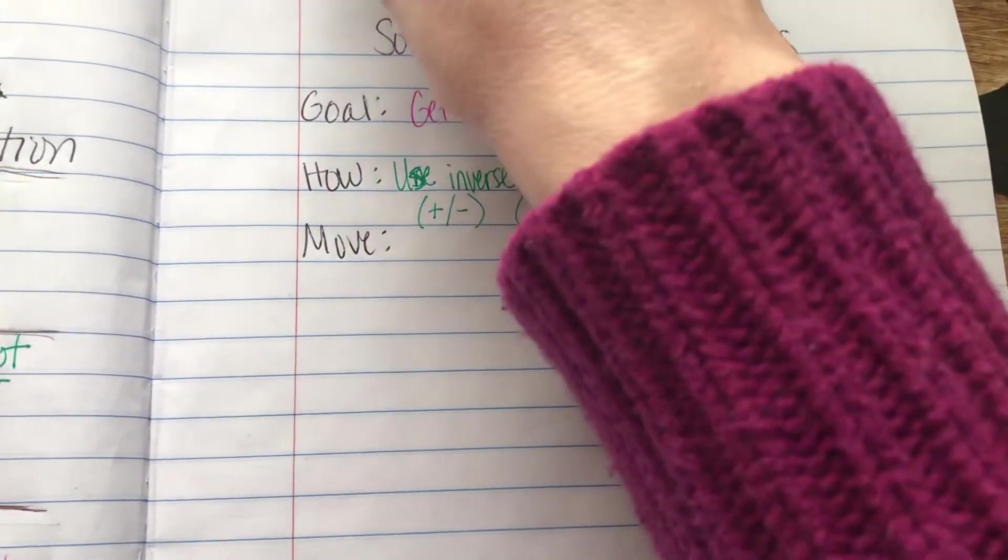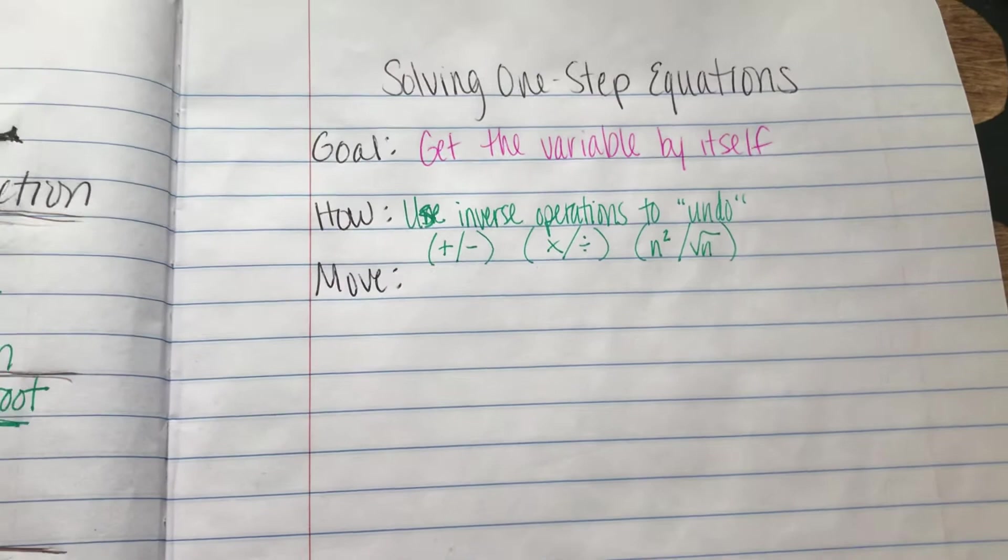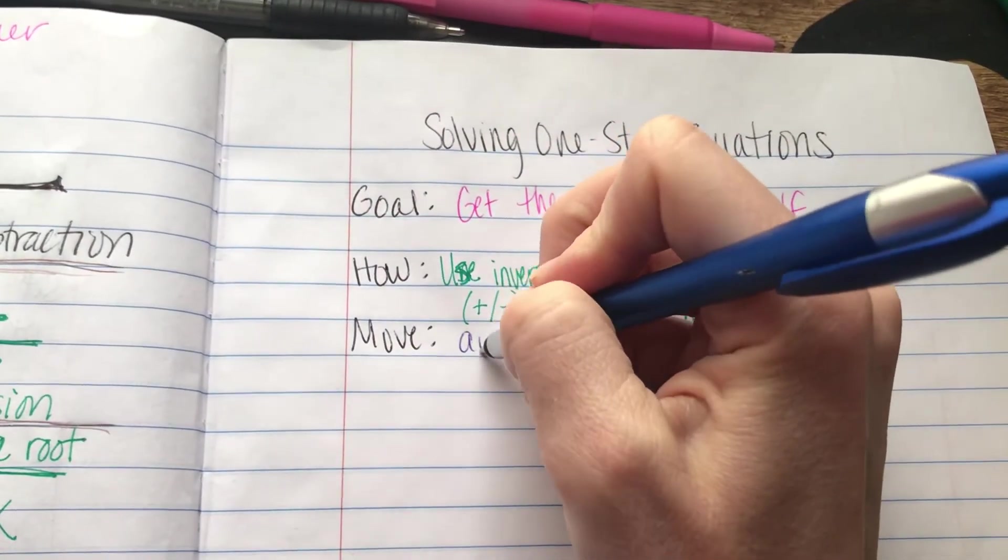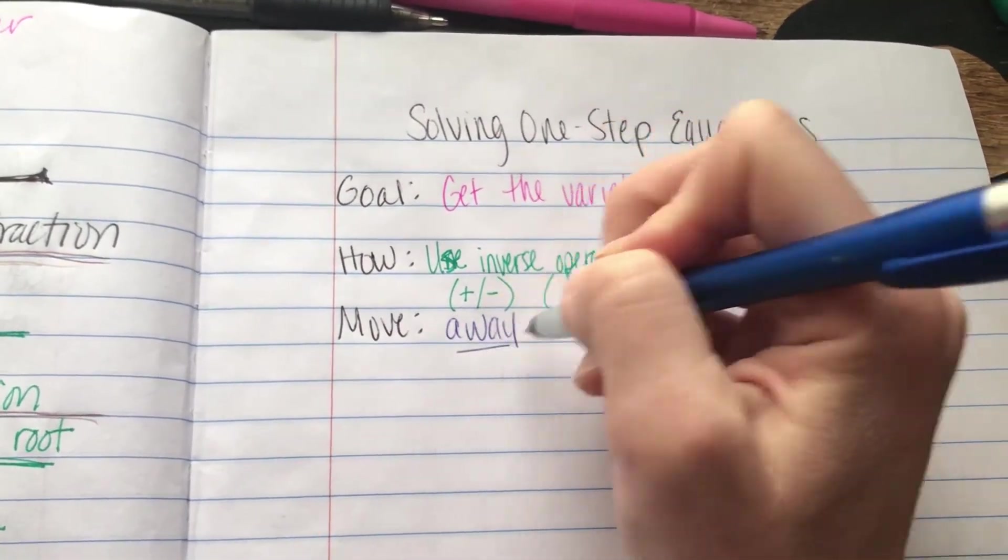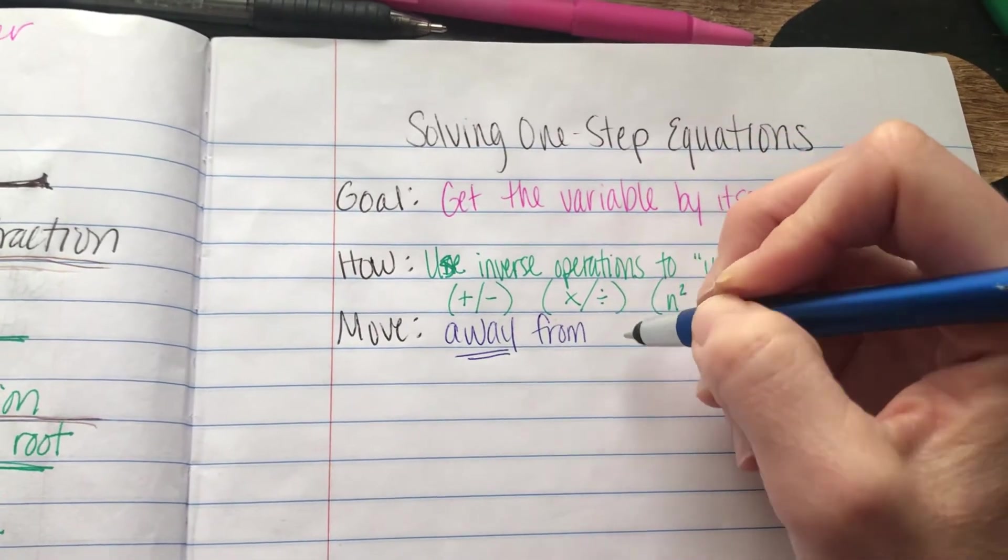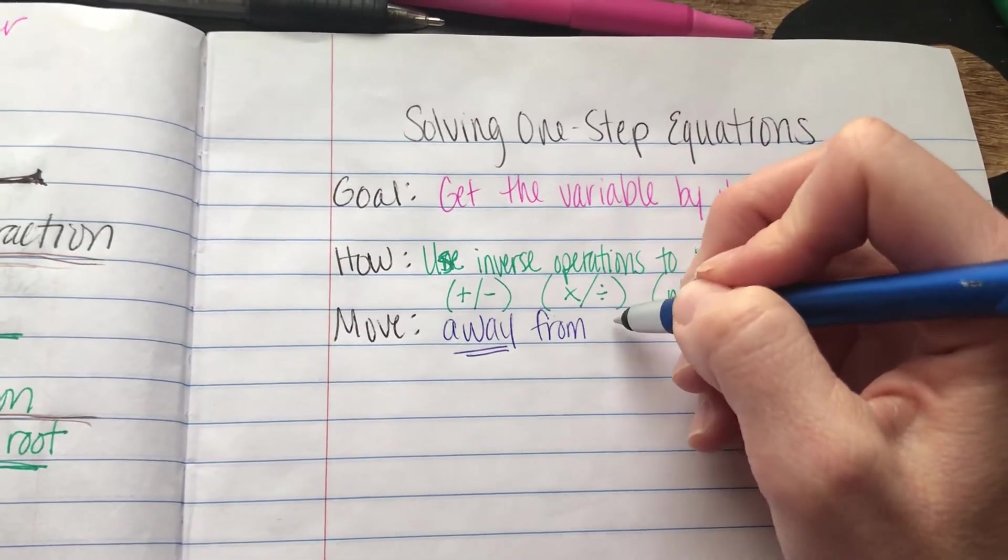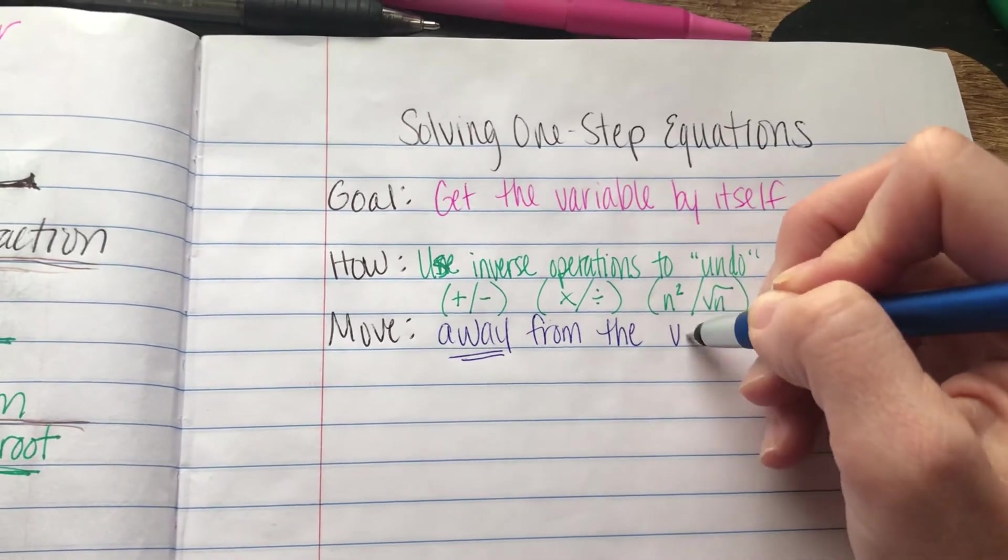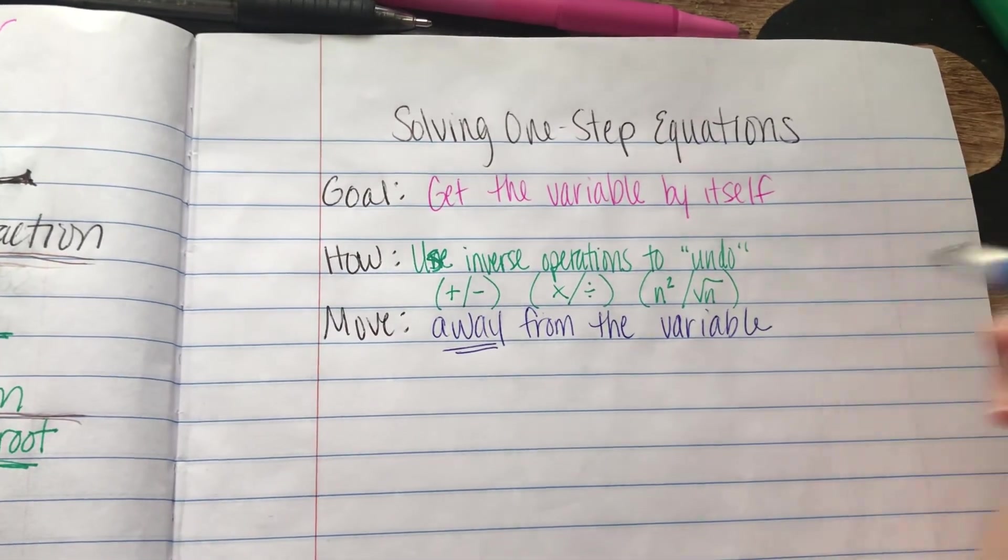And what we're trying to do is move things away from the variable because that's how we're going to get it by itself. If we take everything away from it, move everything away from it, then it will be left alone by itself on one side of the equal sign.